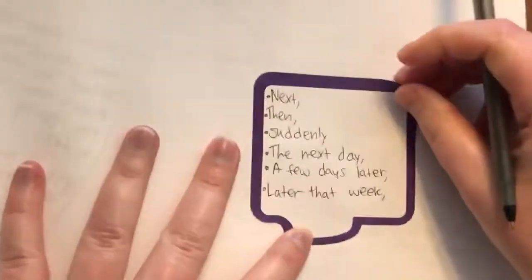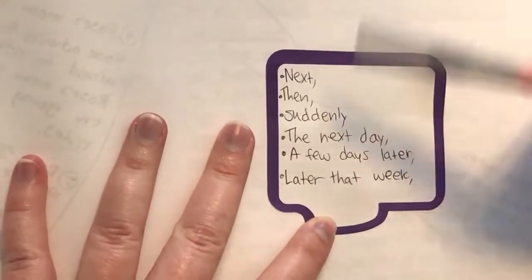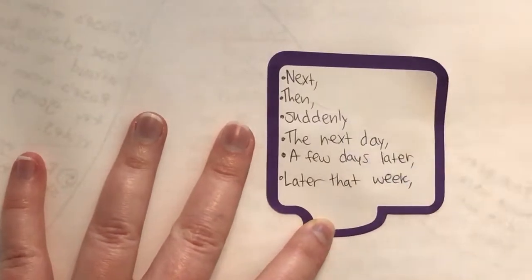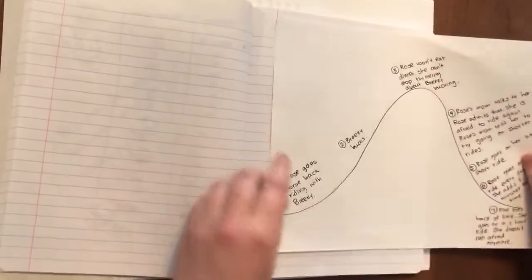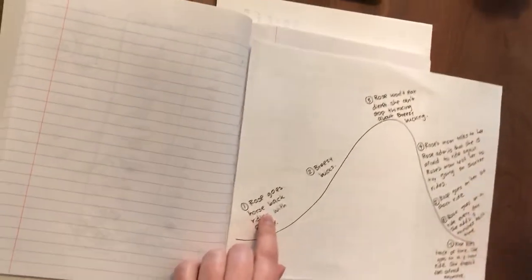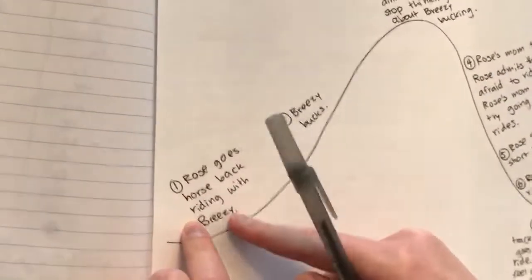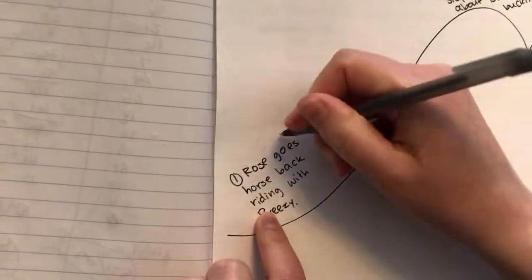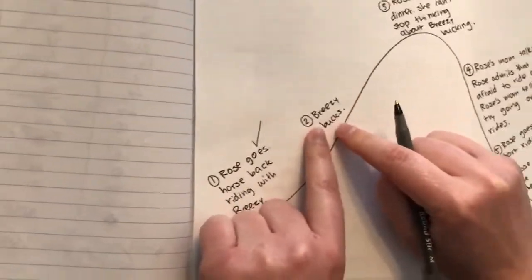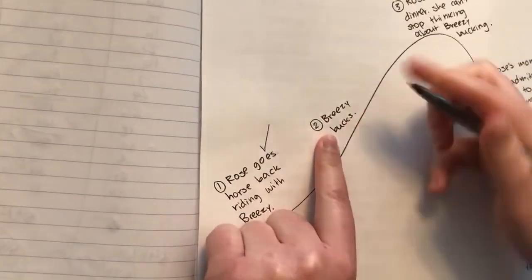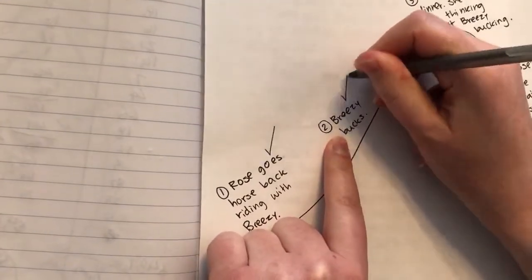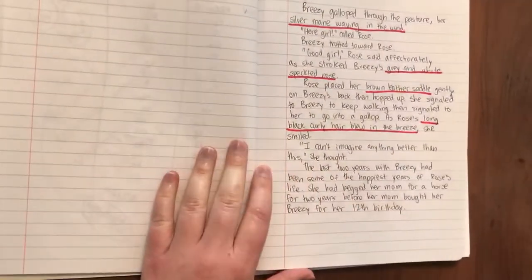Transition words are a really important part of writing since they help us transition in time. The first thing I need to do is look at my story arc. I already wrote about how Rose goes horseback riding with Breezy, so now I need to write about the part where Breezy bucks. I'm going to go back to my writing.